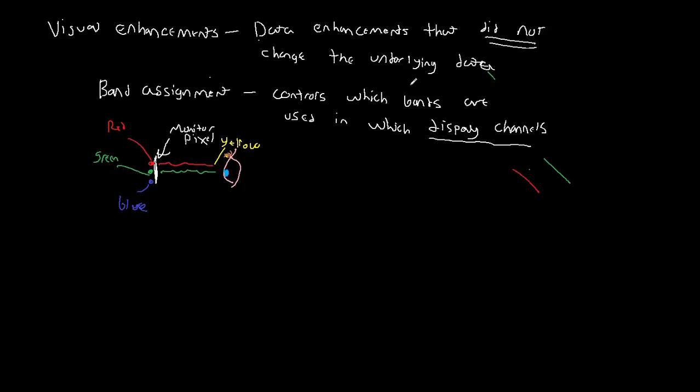So what band assignment is doing and what display channels are, let's just define display channels in terms of this here. So display channels are the interface to the red, green, and blue diodes in your monitor. I'm kind of simplifying things here.